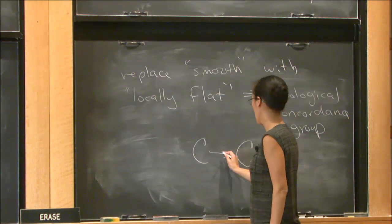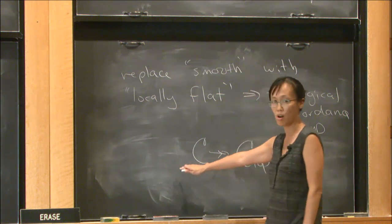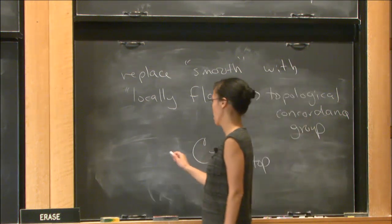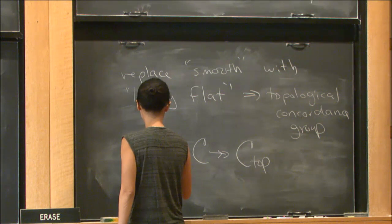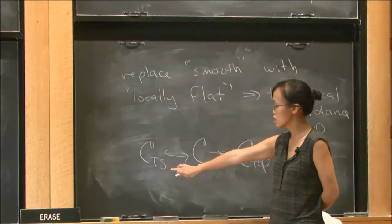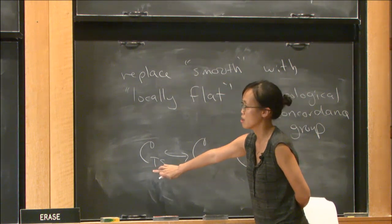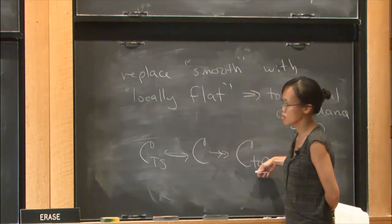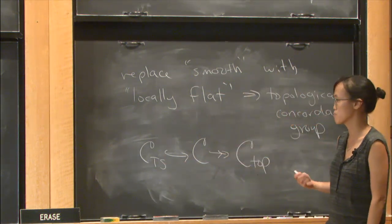So you have this surjective homomorphism, and you might wonder about the kernel of this, which we'll denote C_tf. This kernel is generated by things that are topologically slice but not smoothly slice.